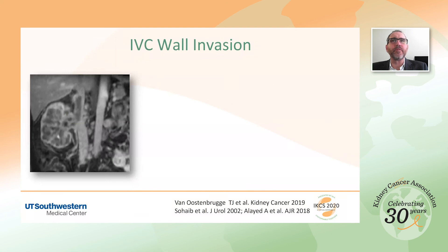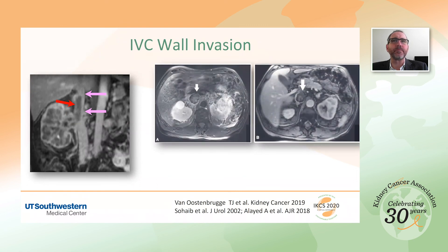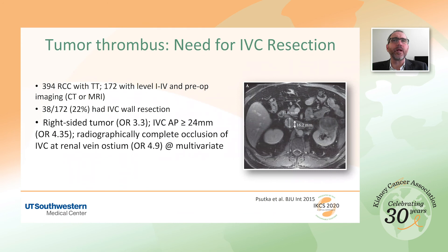An emerging role of imaging is the prediction of venous wall invasion. Whereas some thrombus are clearly separated from the wall of the IVC, others make the wall imperceptible. This qualitative assessment has been reported to have moderate to excellent sensitivity and excellent specificity to rule out wall invasion. A quantitative approach was studied in 172 patients with thrombus level 2 to 4 out of 394 nephrectomies. At multivariate analysis, right-sided tumors, an anterior-posterior IVC diameter greater than 24 mm, and radiological complete occlusion of the IVC at the renal vein level were associated with a 3 to 4 times higher risk of IVC reconstruction during nephrectomy.